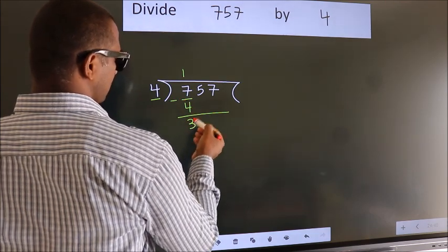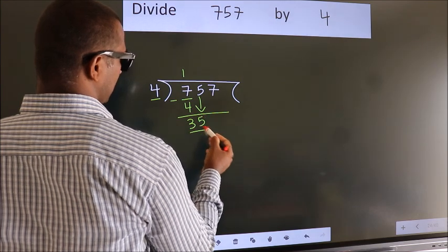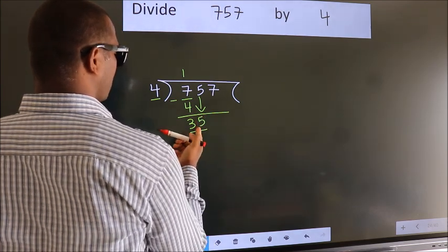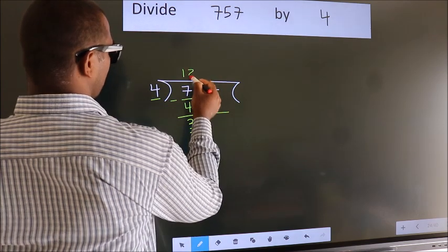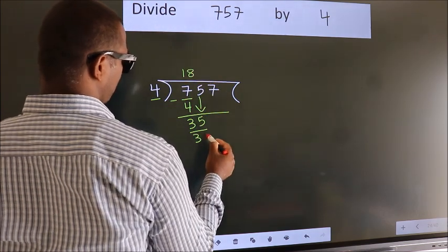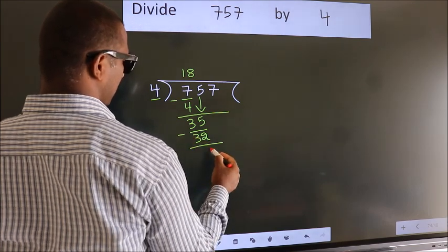After this, bring down the next number. So, 5 down. That makes 35. A number close to 35 in the 4 table is 4 eights, which is 32. Now we subtract and get 3.